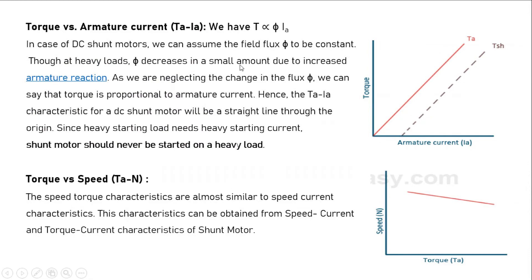Even under heavy load, flux decreases only a very small amount due to armature reaction, and this can be neglected. If we neglect this flux variation, torque is directly proportional to Ia — giving a straight line through the origin. Since heavy starting load requires heavy starting current, a shunt motor should never be started on heavy load.